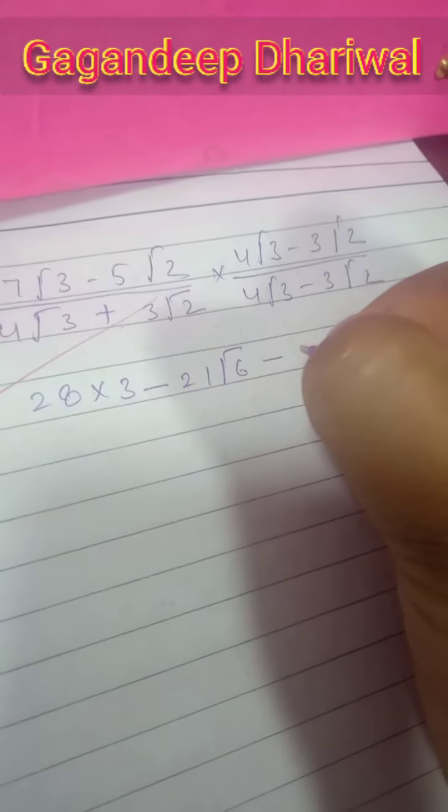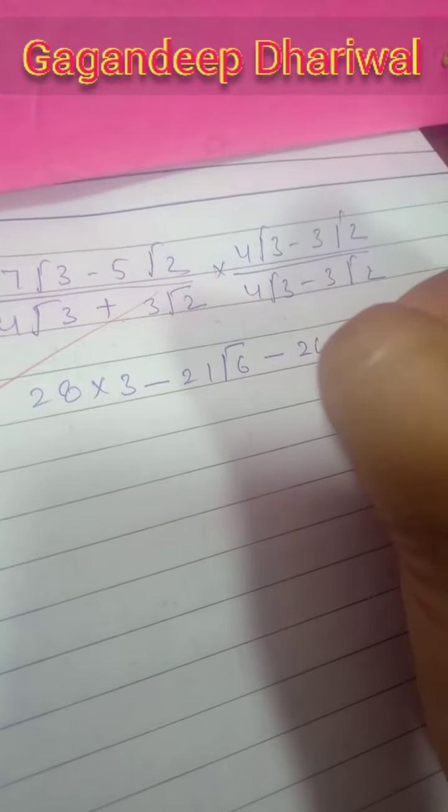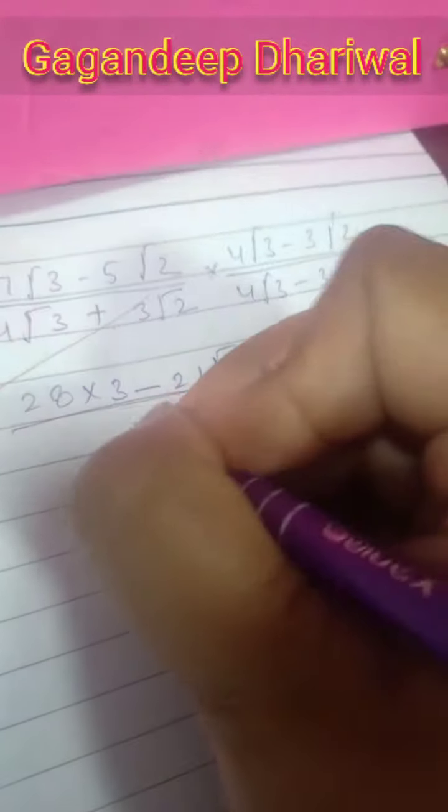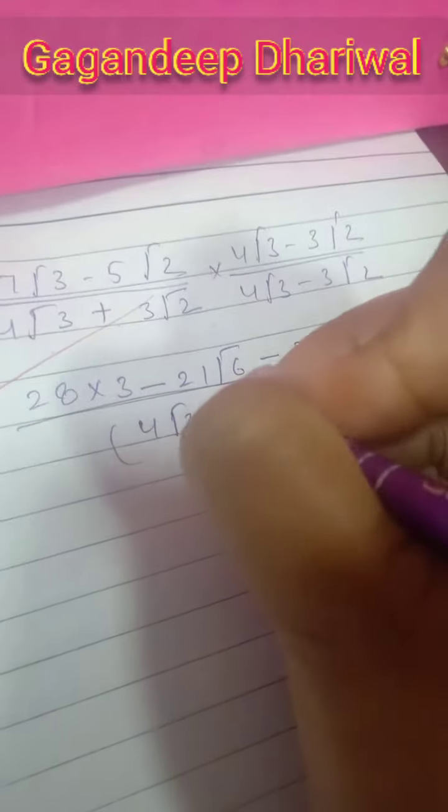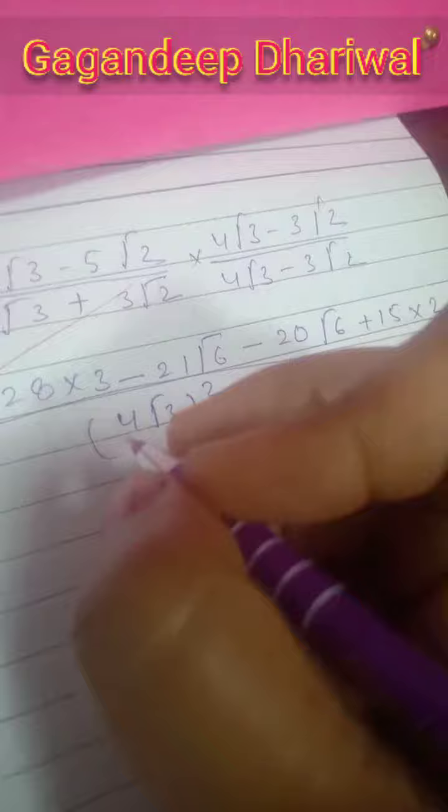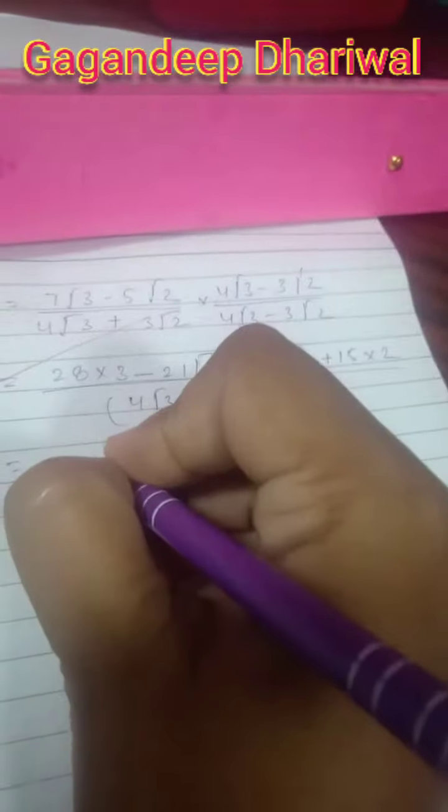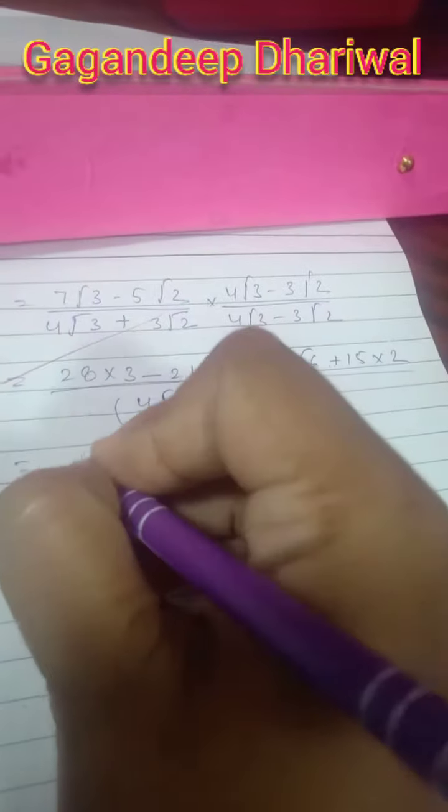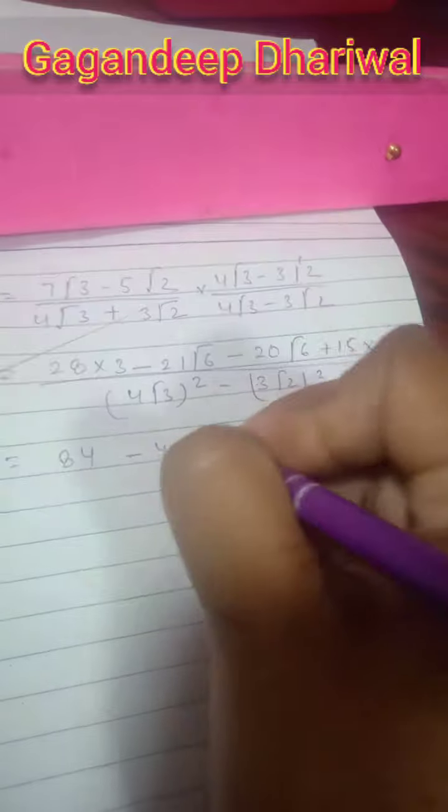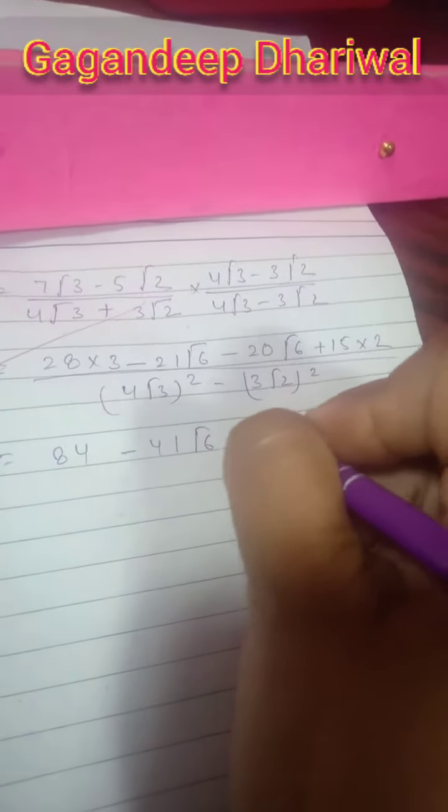Then minus 21√6, then again 5 times 4 is 20, so minus 20√6, then minus minus plus, 5 times 3 is 15 times 2. In the denominator part, this is the formula a² - b², so here you can write (4√3)² - (3√2)². So 28 times 3 equals 84. Minus, now minus minus plus, this you can write as 41√6.